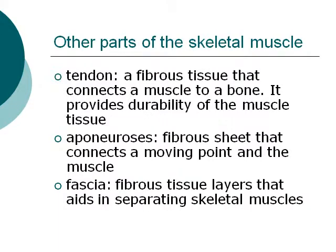Other components of the skeletal muscle: the tendon is a fibrous tissue that connects a muscle to a bone and provides durability to the muscle tissue. Aponeurosis is a fibrous sheet that connects a moving point and a muscle. Fascia is a fibrous tissue layer that aids in separating skeletal muscle.